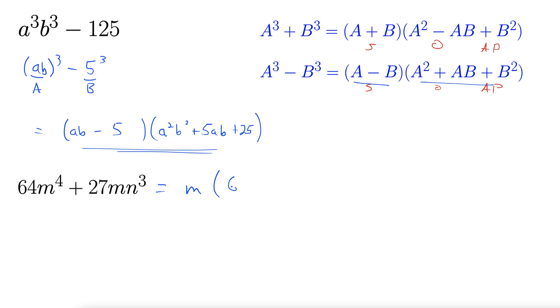m, that leaves us with 64m³ - 27n³. And now we can see that we have the difference of cubes very plainly.